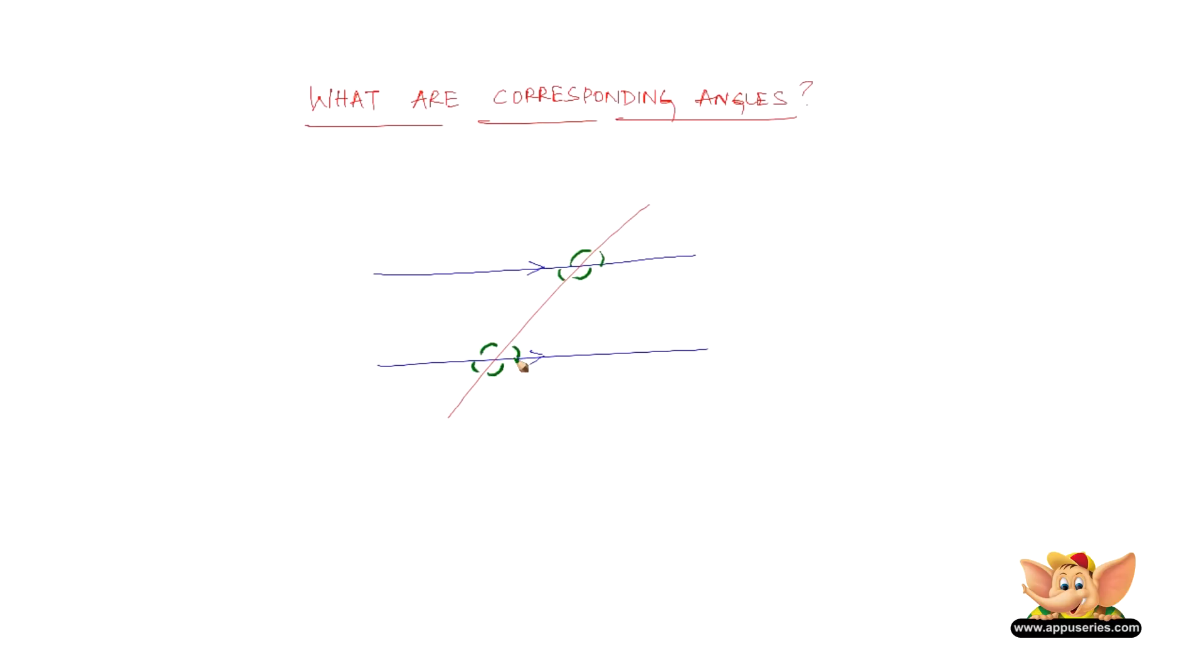Now what are corresponding angles? Two angles are said to be corresponding angles. First of all, the first important point, if they are on the same side of the transversal.